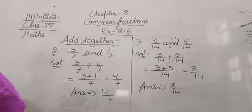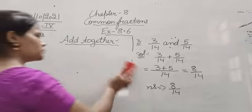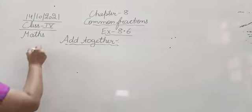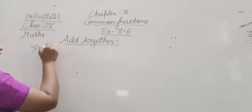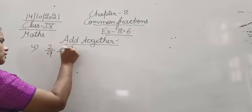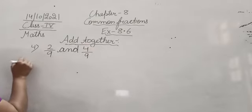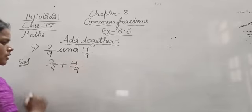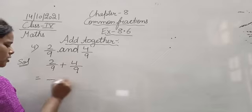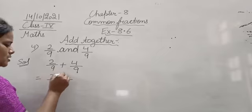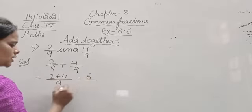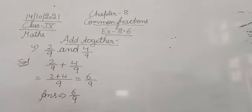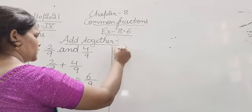Moving next to question number 4. In question number 4, we have to add 2 upon 9 and 4 upon 9. By taking the common denominator 9, we add the numerators 2 plus 4, which gives 6. So the answer is 6 upon 9.